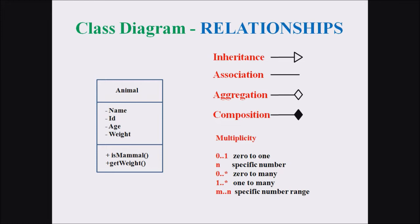The last compartment represents the different methods associated with the class. The different relationships include inheritance, association, aggregation, and composition. The multiplicity factors include 0 to 1, 0 to many, 1 to many, and a specific range of numbers.